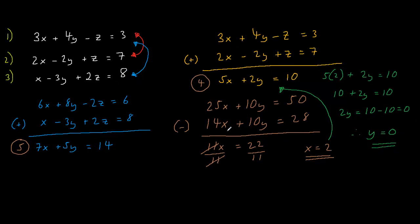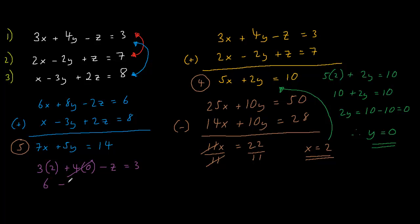Now that we've got the value of x and y, we'll be looking for the value of z. I'm going to plug x equals 2 and y equals 0 into equation 1. So we get 3 multiplied by 2 plus 4 multiplied by 0 minus z equals 3. From this we get 6 minus z equals 3, and therefore z equals 3.